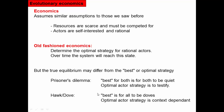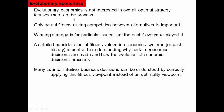In the hawk-dove strategy, the best for the population would be for everybody to be a dove, but that population is easily invaded by a hawk or a mixed hawk-dove strategy. So the optimal actor strategy is in fact context dependent. This way that economics has been done for a long time is missing out on these evolutionary processes. Evolutionary economics is not interested in the overall optimum strategy — it focuses more on the process, analogous to evolutionary biology.